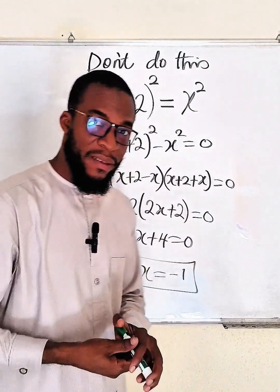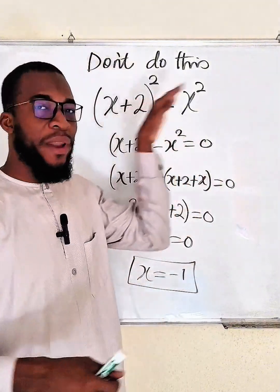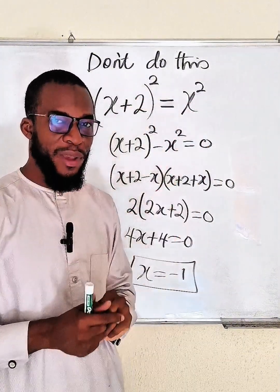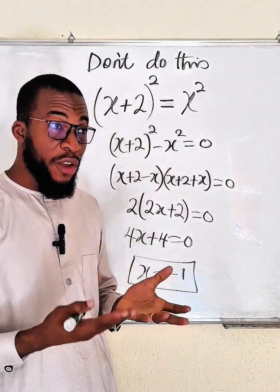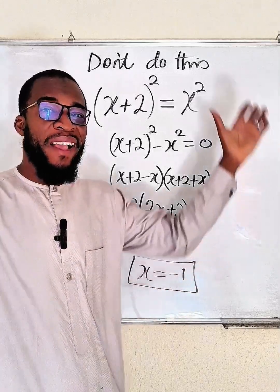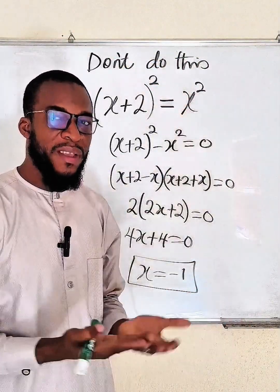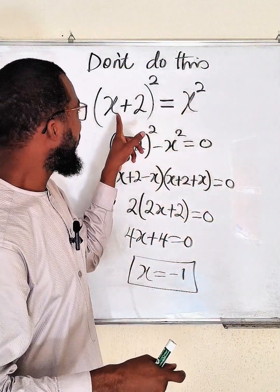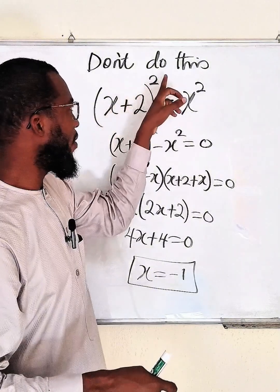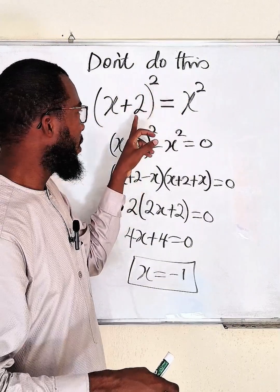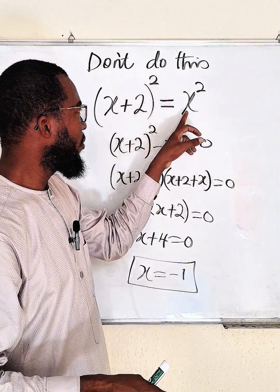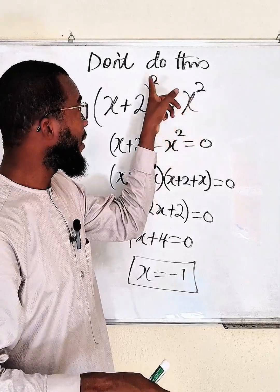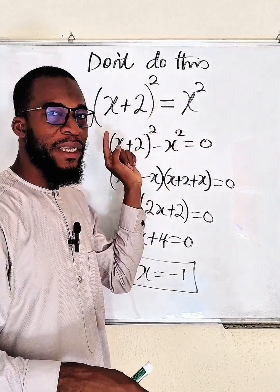So please, whenever you have common exponents, do not equate the bases. But I assure you that you can always equate the exponents if the bases are the same. Suppose we have 2^x equal to 2^y, it implies that x must be equal to y. You can equate the exponents when the bases are the same.